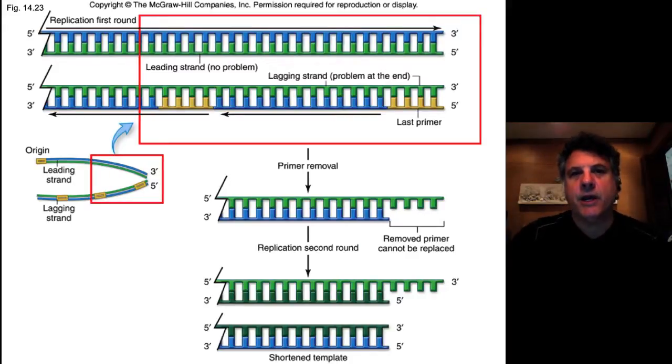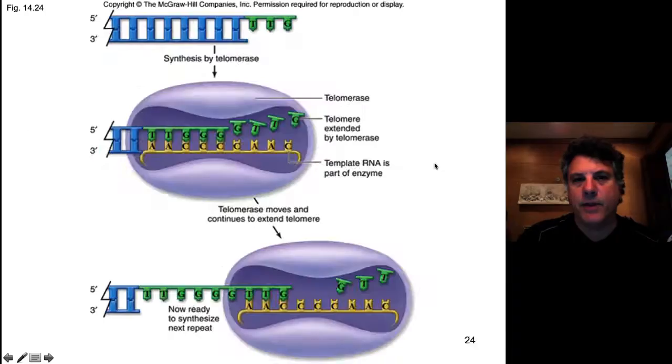When the telomeres become short enough, cells enter senescence. They are triggered to senesce and die. So when you have a dividing population of cells, you must have a way to extend the telomeres so that they will not reach a shortening critical point and cause the cells to senesce and die. And the enzyme that is responsible for elongating telomeres, keeping them long, to get around this end-shortening problem, that enzyme is called telomerase.